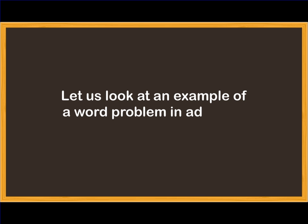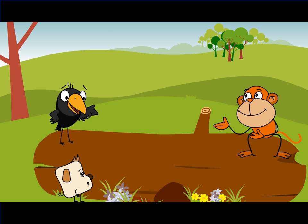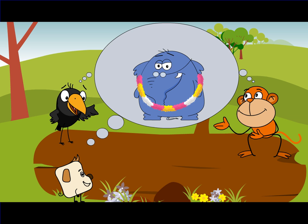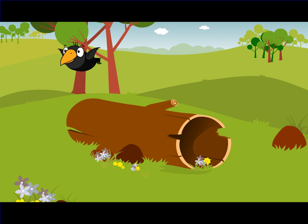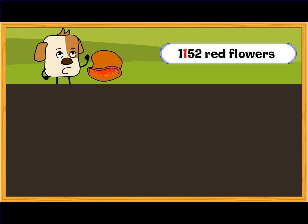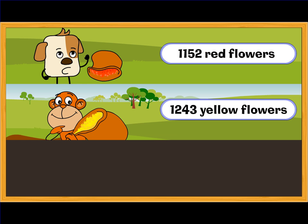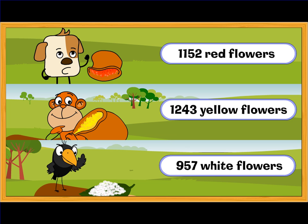Let us look at an example of a word problem in addition. Crow, Jojo, and Gull want to make a garland of flowers for Thad on his birthday. Gull collects 1152 red flowers, Jojo collects 1243 yellow flowers, and Crow collects 957 white flowers.